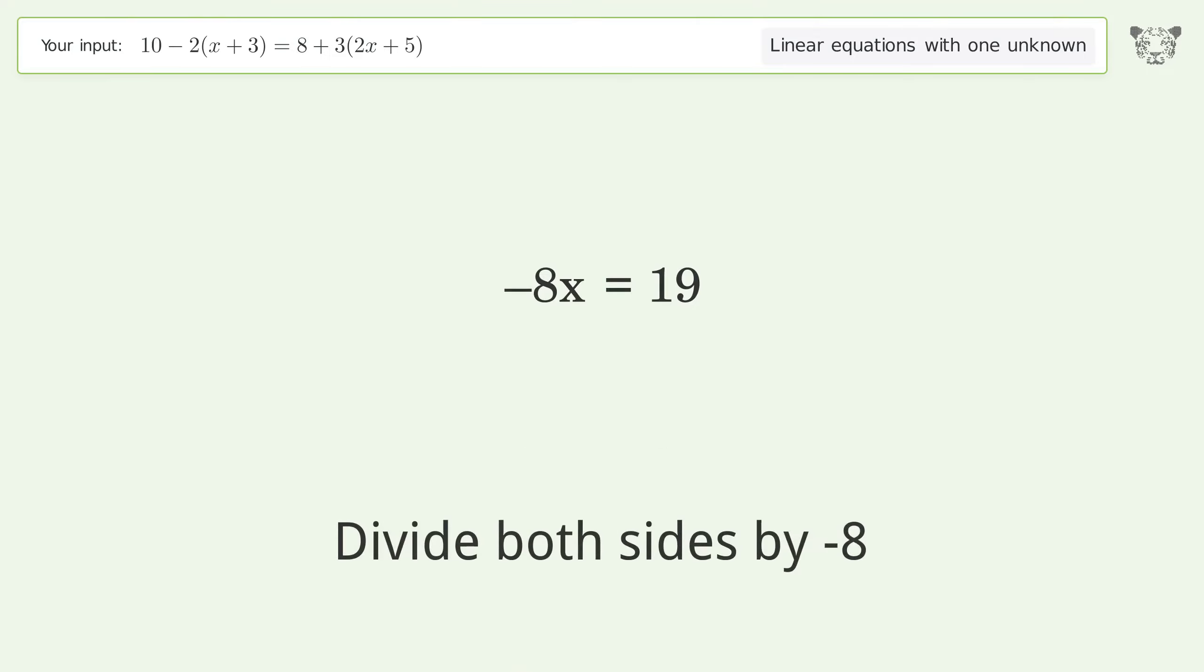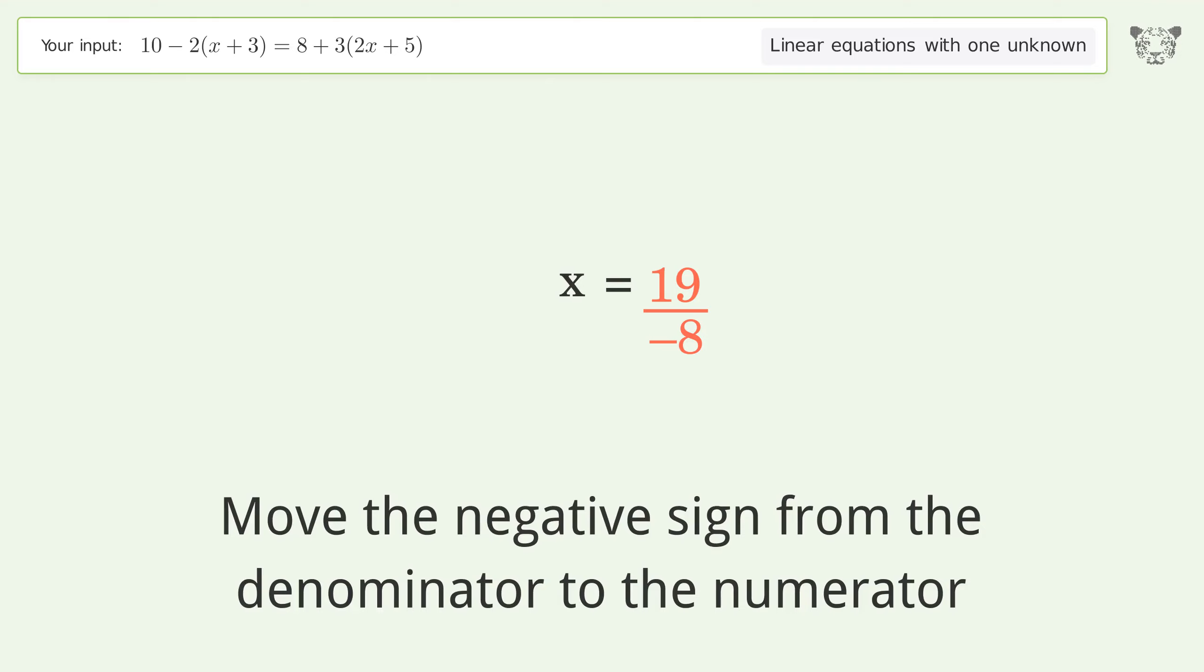Divide both sides by negative 8. Cancel out the negatives. Simplify the fraction. Move the negative sign from the denominator to the numerator.